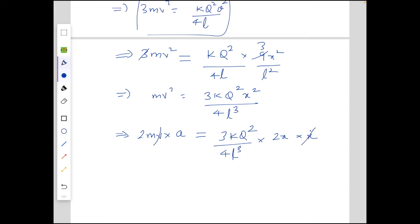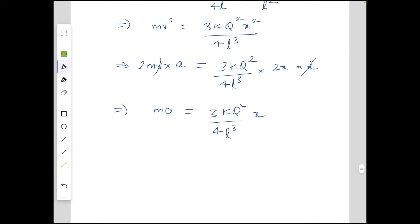So what we get is 2ma equals 3kQ²/(2L³) times x. We get an equation of simple harmonic motion where ω² from the normal equation equals 3kQ²/(4mL³).